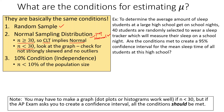If the sample size is less than 30, we have to look at the graph — we're checking: is it not strongly skewed and are there no outliers? We may do a box-and-whisker plot, dot plot, or histogram. On the AP exam they'll sometimes give you the picture. And to use the standard deviation formula — s sub x over the square root of n — we need the independence condition: our sample must be less than 10 percent of the population size.